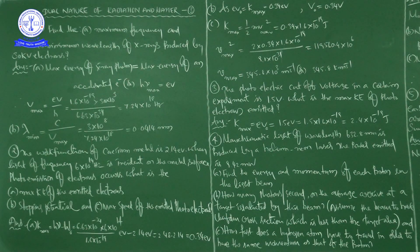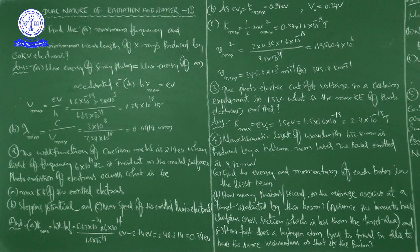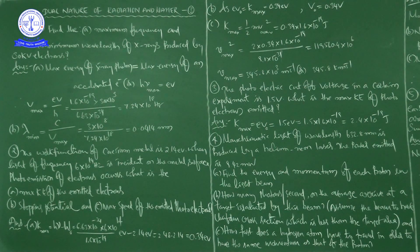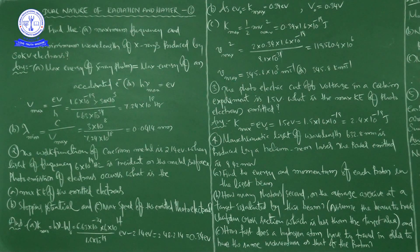First problem: find (A) the maximum frequency and (B) the minimum wavelength of X-rays produced by 30 kilovolt electrons. We have to find maximum frequency and minimum wavelength. The key statement is: the maximum energy of an X-ray photon equals the maximum energy of an accelerated electron.